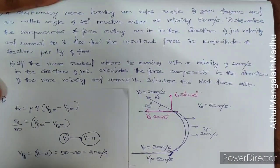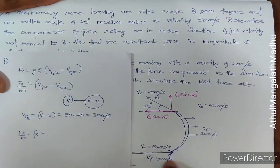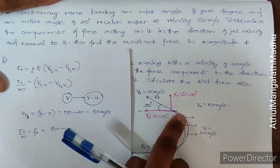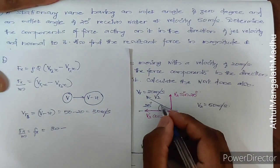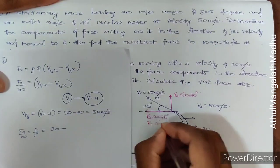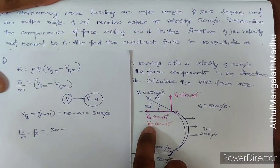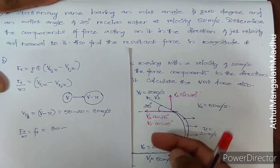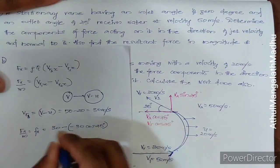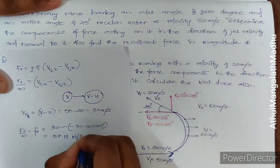For the moving vane, the force per mass in x-direction is: fx = Vr1x − Vr2x = 30 − 30 cos25°. Solving this, fx = 57.19 Newton per kilogram.